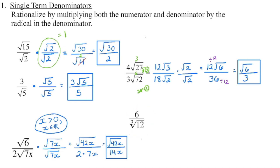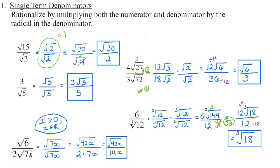For the next example, we have a cube root in the denominator. Because it's a cube root, we need to multiply that value three times to eliminate the radical. So we multiply by the cube root of 12 times the cube root of 12 times the cube root of 12 — taking the cube root gives us 12 in the denominator. In the numerator, 6 times the cube root of 12 squared gives 6 times the cube root of 144. We can pull out a perfect cube of 8 — the cube root of 8 is 2, so 2 times 6 is 12, with the cube root of 18 remaining. Then 12 divided by 12 cancels out, leaving just the cube root of 18 as our final answer.